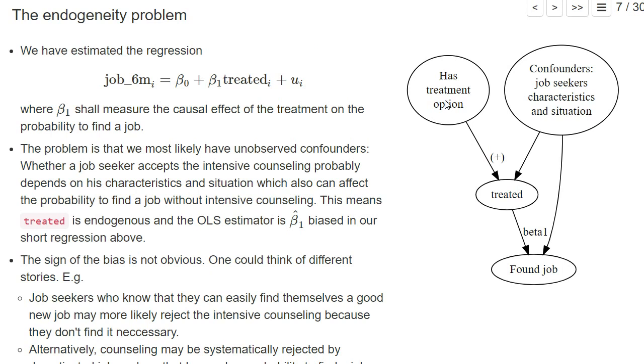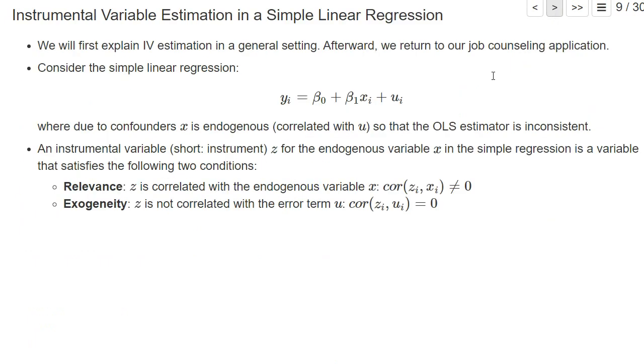Let's look at these two conditions for an instrument. The relevance condition: is the treat option correlated with the treat variable? Yes, it's positively correlated because only those subjects who have the option for intensive counseling can have a one in the treat variable. So only if treat option is one can we have a one for treat, even though not everybody is treated who has the option.